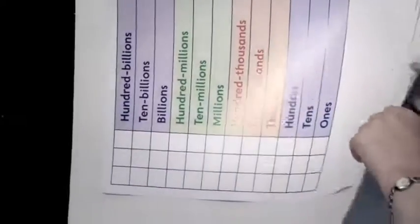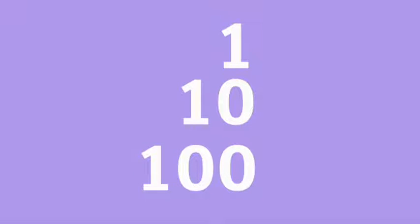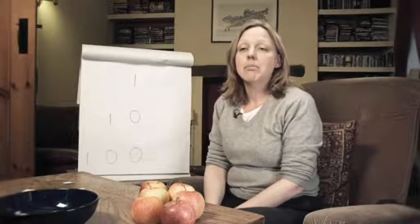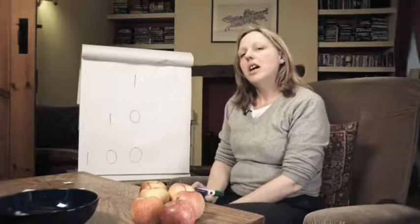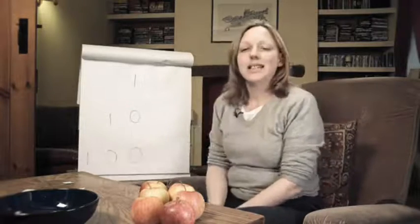So, for example, if we compare the numbers 1, 10, and 100, we can see how the value of the digit 1 changes massively depending on where it is in a number. Each time it moves along a space to the left, its value gets 10 times bigger.